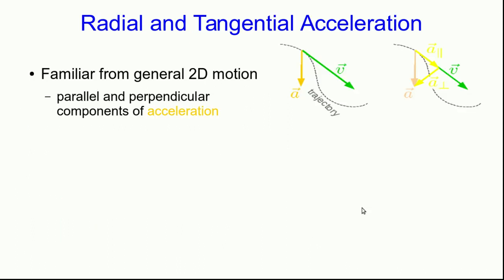Let's move away from angular velocity and angular acceleration, and back to what's more familiar from earlier in the course — velocity and acceleration. After all, acceleration is the thing that is directly related to the vector sum of forces on an object, not the angular acceleration, but the ordinary acceleration. And the velocity is the thing directly related to the momentum of the object, and the speed — the magnitude of the velocity — is directly related to the kinetic energy.